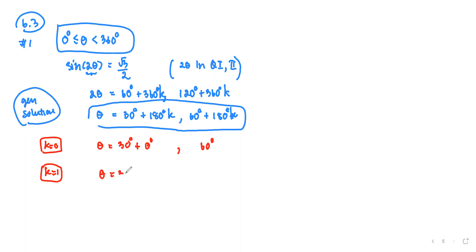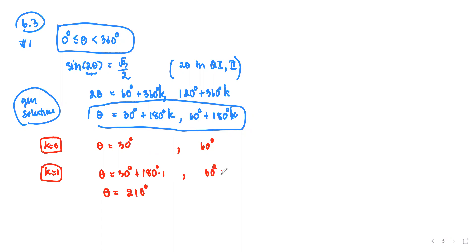For k = 1, angle θ = 30° + 180°×1 = 210 degrees. The second case is 60° + 180°×1 = 240 degrees. So far we have solutions within the first revolution: 30°, 60°, 210°, and 240°.